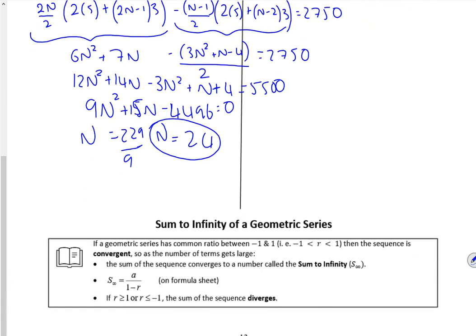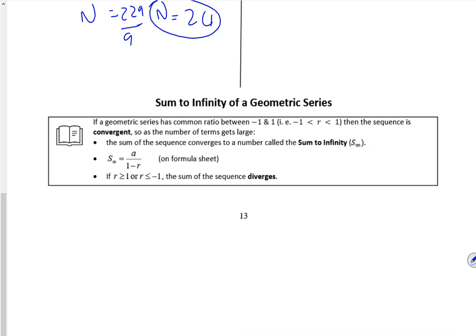Right, sum to infinity, we're getting there. So the idea of this is that as that term gets smaller, the sum eventually hits a certain value and this only works if the number gets smaller. To make the number go smaller the r value has to lie between plus or minus 1. This formula is on the formula sheet. It's just sticking numbers in, but r has to be between plus or minus 1 to make it work.